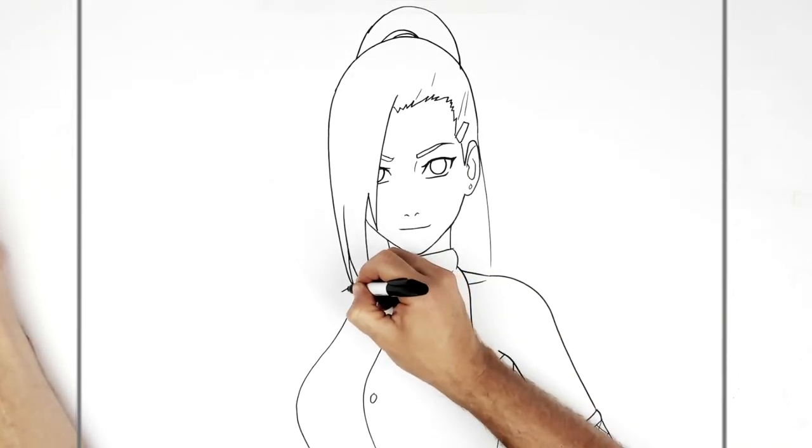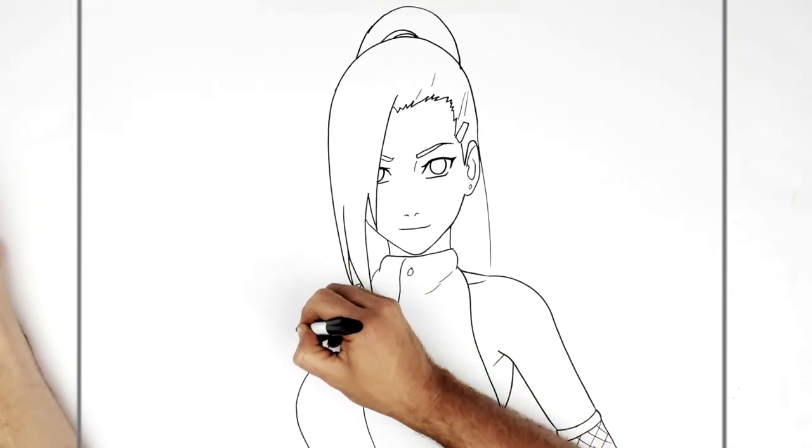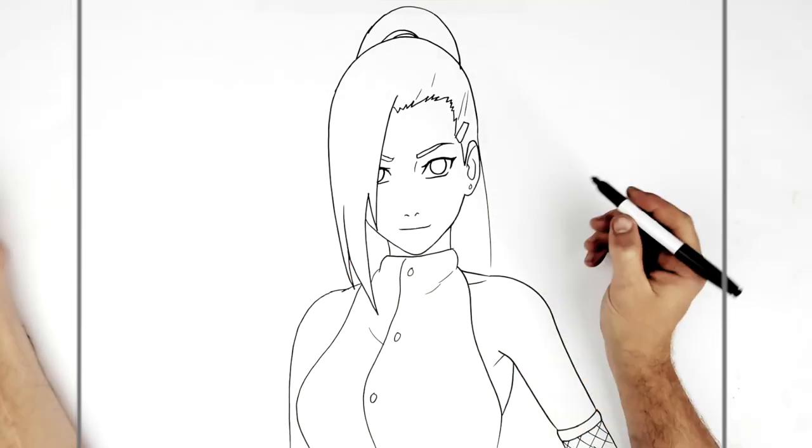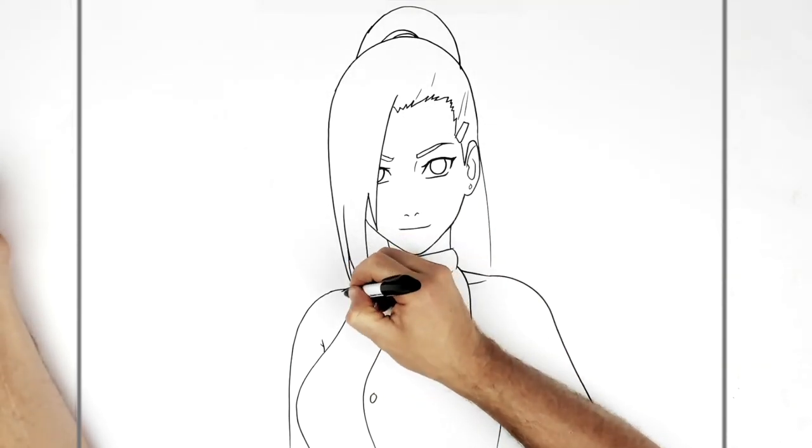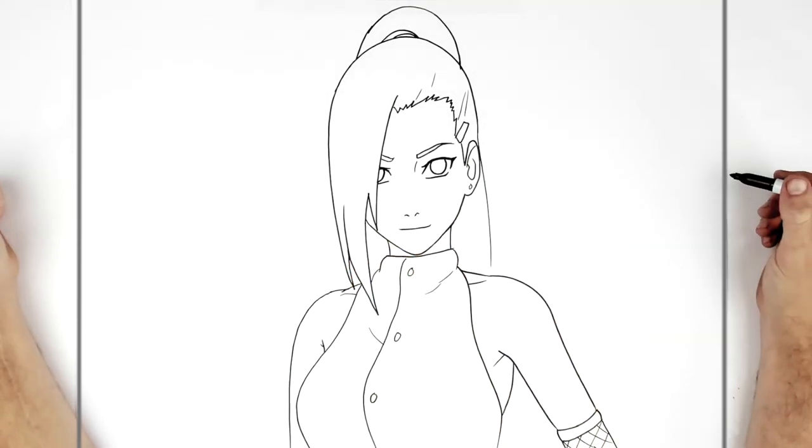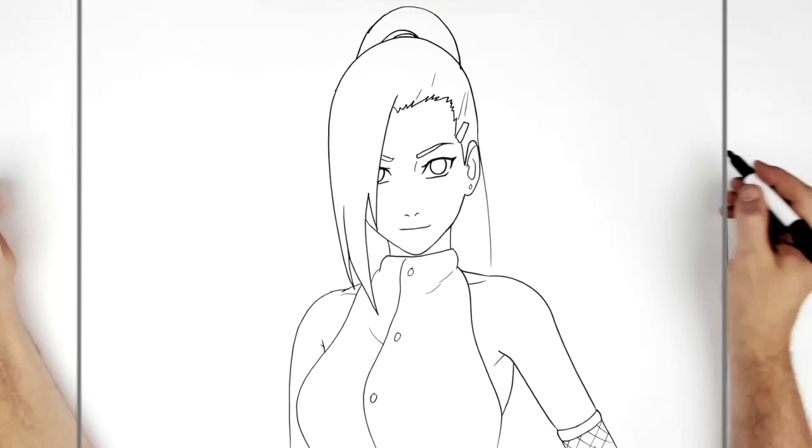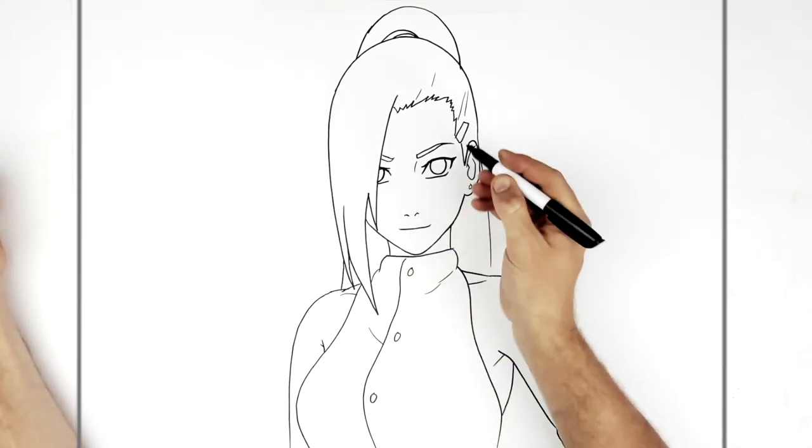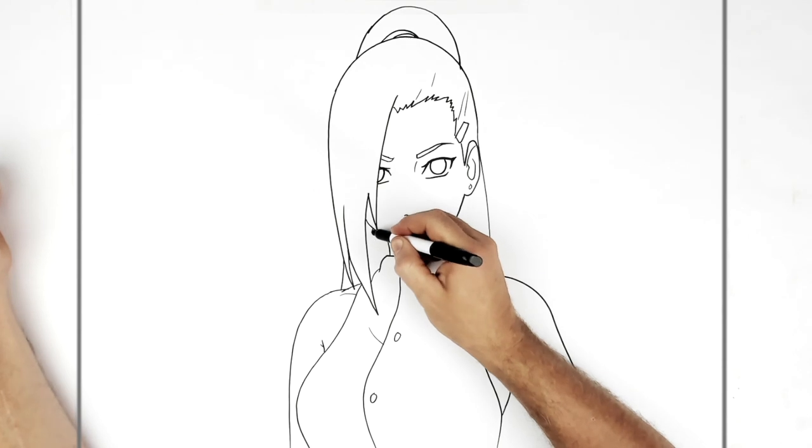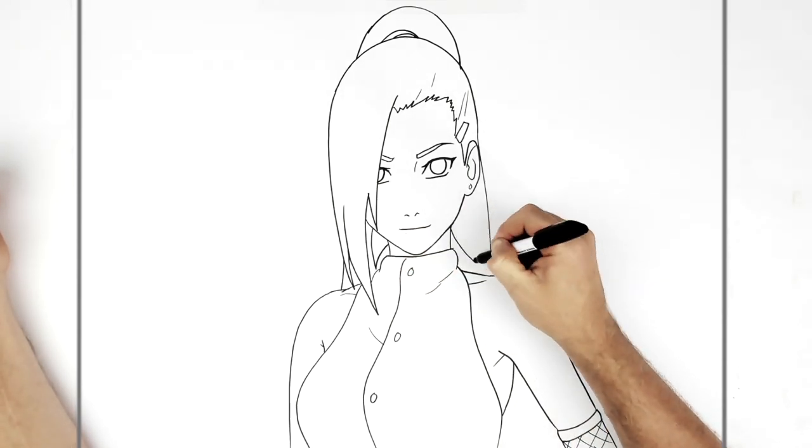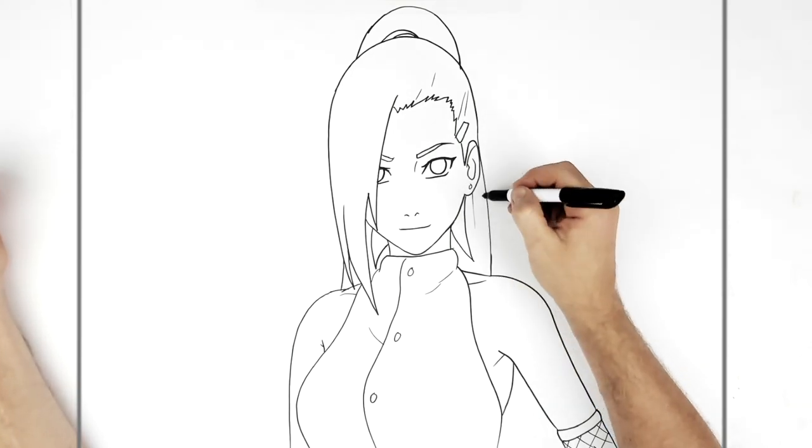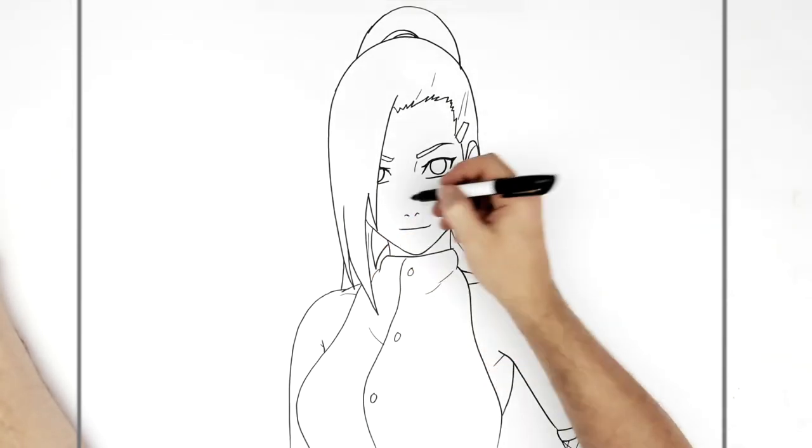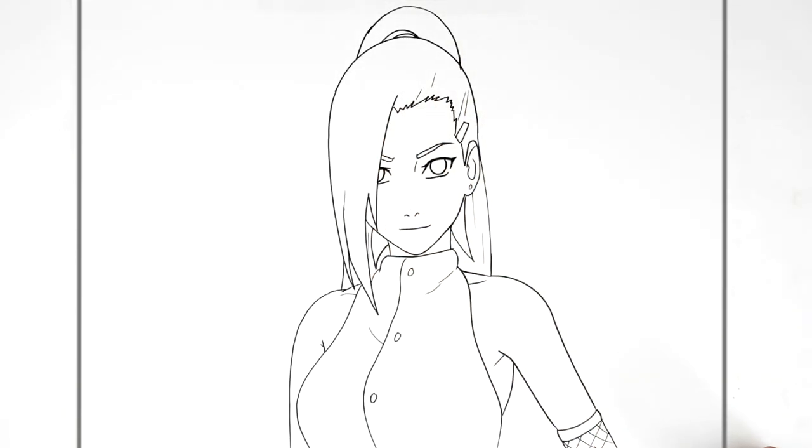So then the other shoulder. Smaller. Comes down this way. And we can just see like her armpit line and the collarbone. And then her hair goes that way. Hair spike here. Hair spike here. And her hair goes behind her back. You can add some textures to that if you want. Like so.